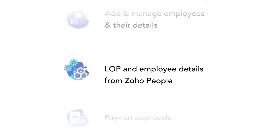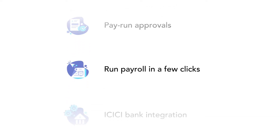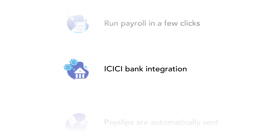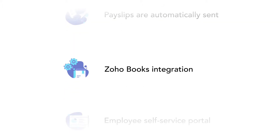You can get loss of pay information from Zoho People. You can set up pay run approvals and run your payroll in a few clicks. You can pay your employees directly from within the app with ICICI Bank integration. Employee payslips will be automatically generated and sent to them, and corresponding accounting entries are posted automatically within Zoho Books.